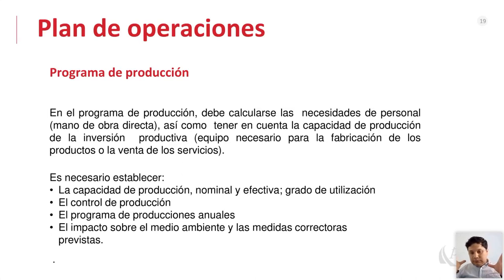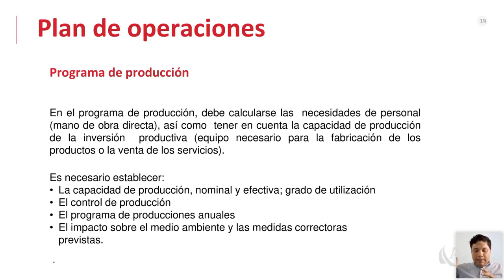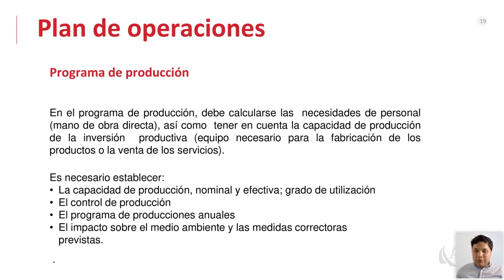Algunas empresas se asocian cuando están al 100% de capacidad pero tienen un pedido para exportar. Van 50-50 con alguien de confianza que tenga buena calidad de producto. O contratan a un tercero que cumpla con la estandarización y calidad que pide el comprador. Esto evita tener que invertir en nueva maquinaria para un único pedido que quizás solo dure tres meses, y luego quedarse con el 50% de capacidad instalada parada. Siempre es bueno evaluar tu capacidad de producción, control de producción e impacto ambiental.